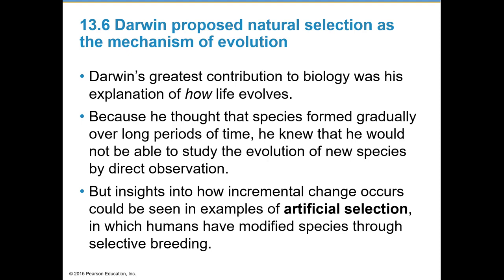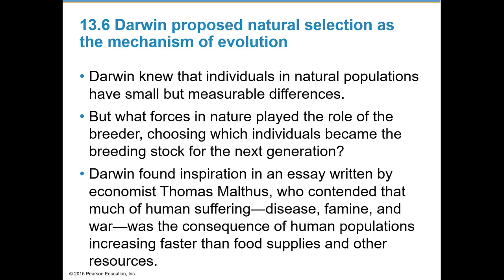Darwin's greatest contribution was his explanation of how life evolves. He thought species formed gradually over long periods, so he could not study evolution by direct observation, but insights into incremental change could be seen in artificial selection — where humans modify species through selective breeding. Darwin knew that individuals in natural populations have small but measurable differences, and he wondered what forces in nature play the role of the breeder selecting which individuals become the breeding stock.